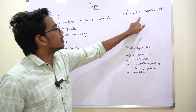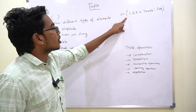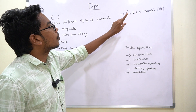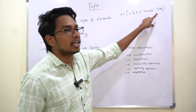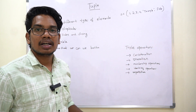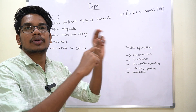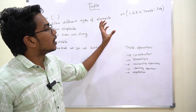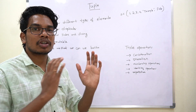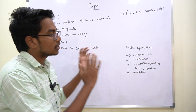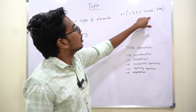Let's define a tuple. Write the variable name, open parenthesis, close parenthesis, with different types of elements. Every element should be separated with a comma. Each element is separated from the others.